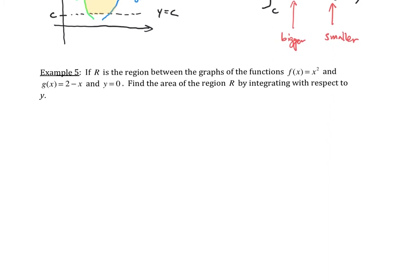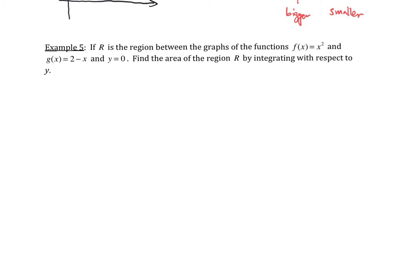Let's look at Example 5. Let R be the region bounded between the graphs of f of x equals x squared, g of x equals 2 minus x, and y equals 0. Let me graph the situation: here's the y-axis and x-axis. I'll label the points 1 and 2 on each axis.